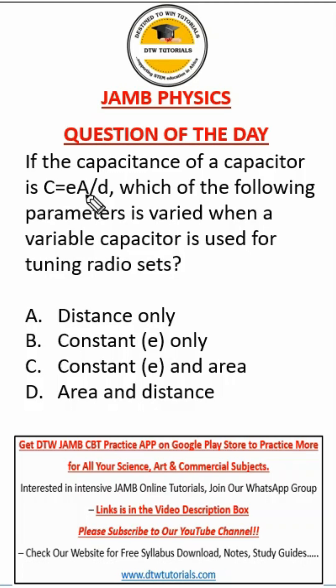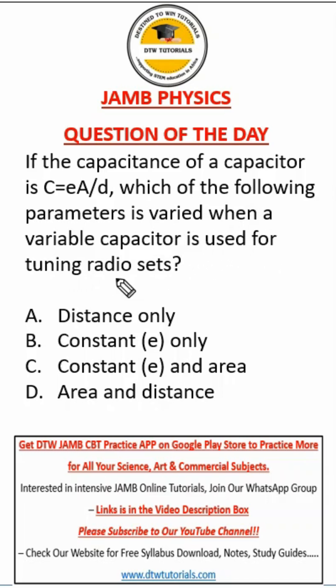A is the area, then divided by the distance. It says which of the following parameters is varied when a variable capacitor is used for tuning a radio set? So now, a variable capacitor...